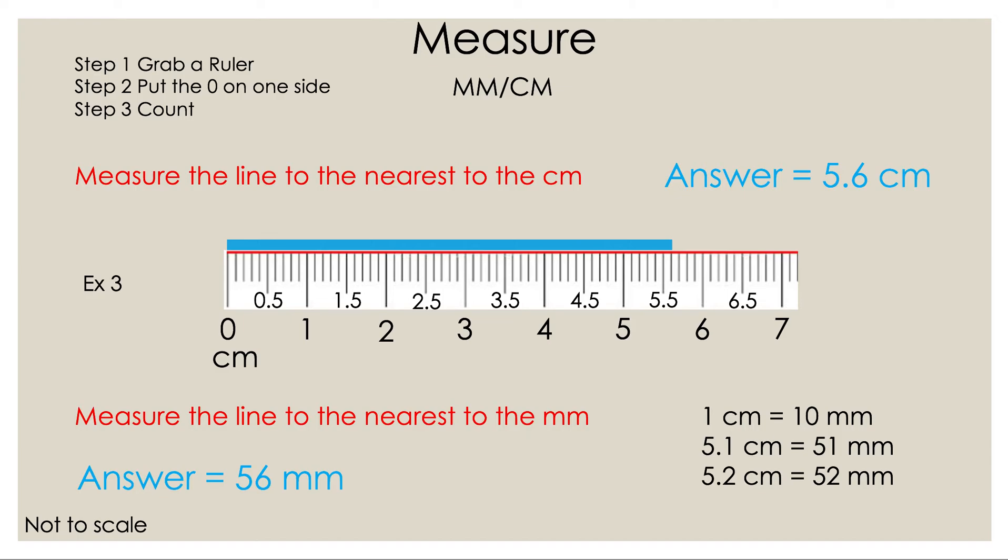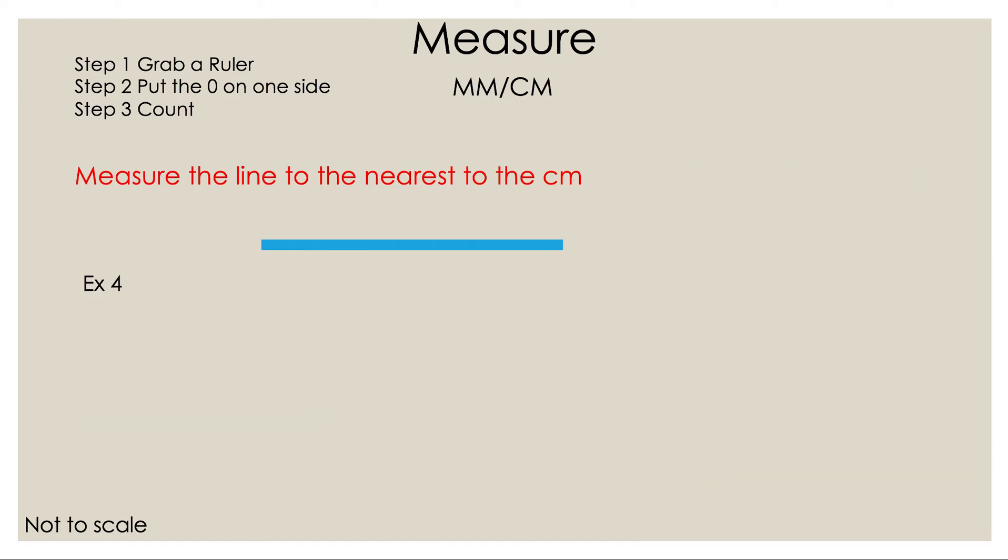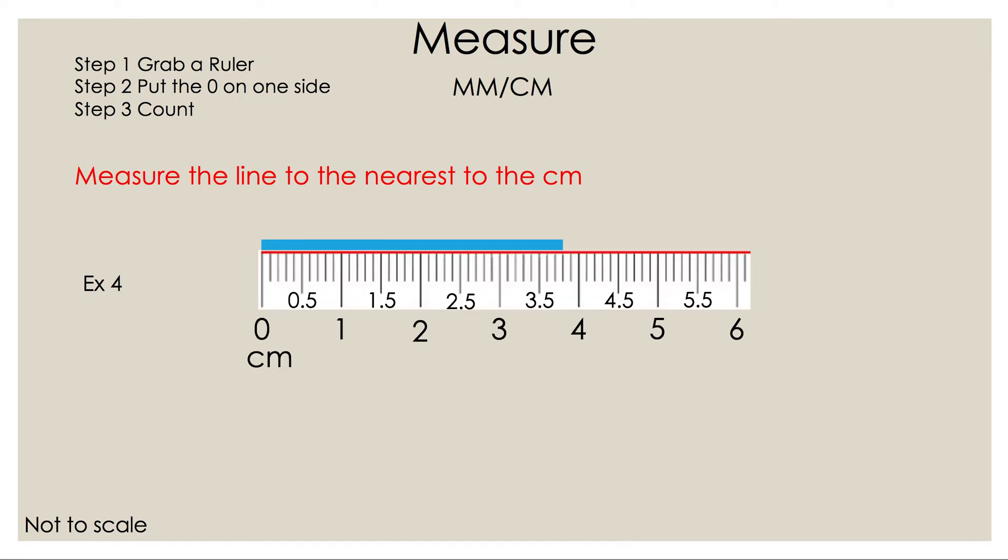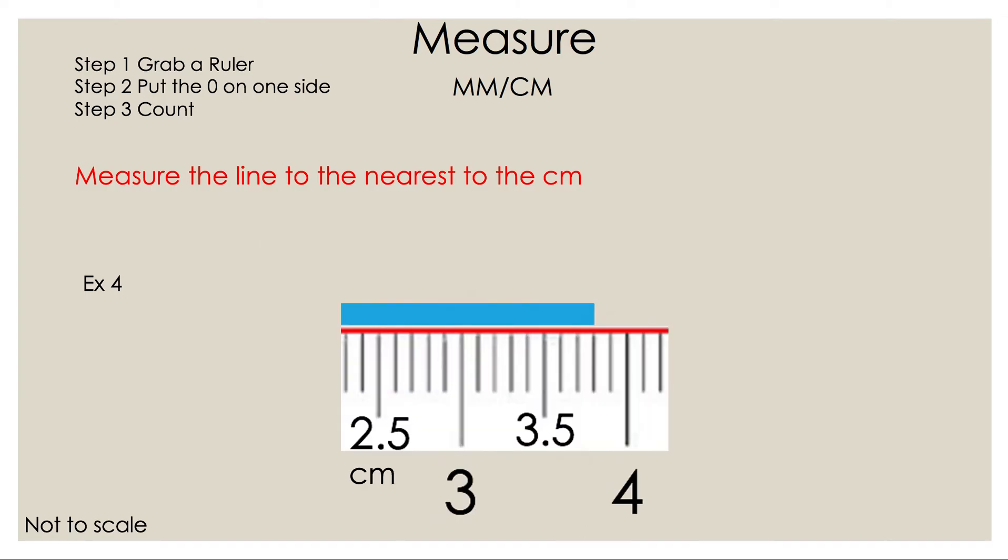Let's take a look at example four. We're going to measure this line to the nearest centimeter once again. We'll put the ruler next to the line, blow it up so it's easier to count. We're going to pick 3.5 because it has the number written down. Now if it's not written on the ruler that's okay. You should know that between 3 and 4 is 3.5. So 3.5, 3.6, 3.7 and 3.8 is your answer.